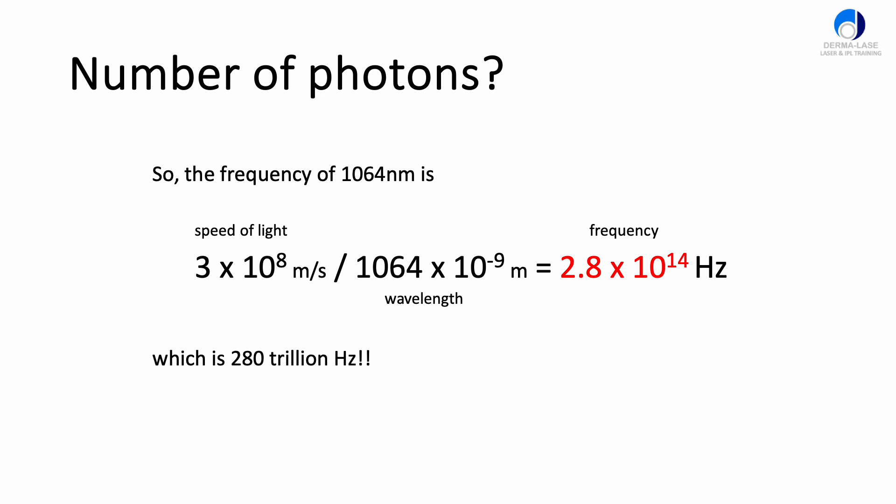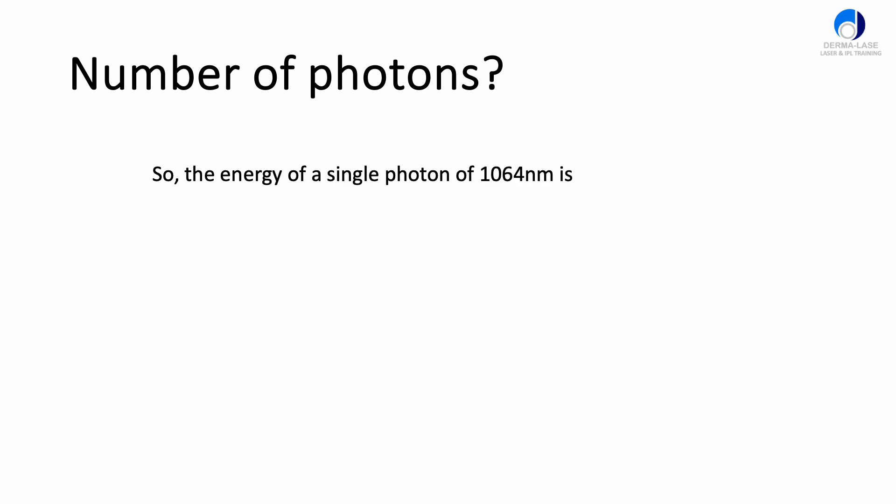Now we know the frequency we can use the Planck equation to calculate the energy of each individual photon. We plug in the 2.8 times 10 to the 14 hertz, multiply it by the Planck constant, which is 6.626 times 10 to the minus 34, and the energy of each individual photon for this particular wavelength works out at 1.868 times 10 to the minus 19 joules. Each individual photon has a tiny, tiny amount of energy.